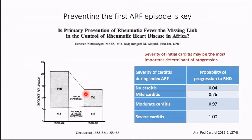Data from Brazil show that the severity of the initial carditis is probably the most important predictor of progression. Patients with no carditis have a very small chance of progression, whereas patients who have severe carditis in the beginning have almost 100% chance of progressing to valve disease. So the impact of secondary prophylaxis is going to be best in those with mild or no disease.